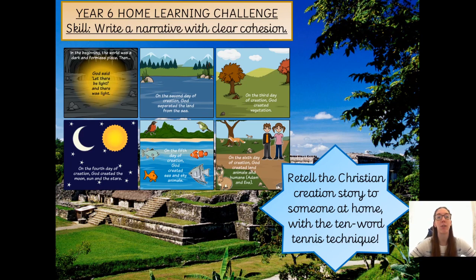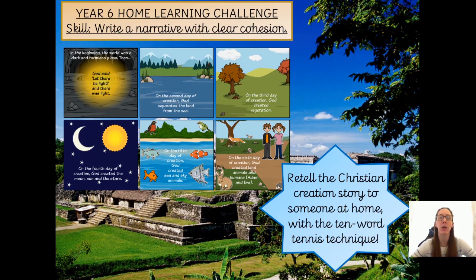The first thing I'd like you to do to get yourself ready for this task is grab someone in your house — someone that you think will be able to do this with you — and you are going to retell the creation story from Christianity, from the Bible, with your chosen person. The challenge is the 10 word tennis technique: bat the story back and forth, each person gets 10 words, going from the start of the creation story all the way to the end. We have done these in class before.